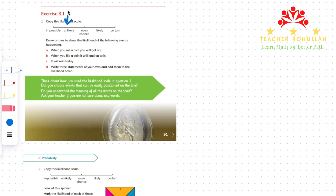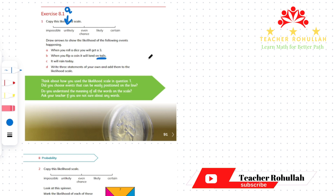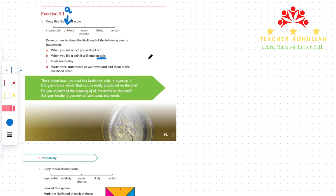I will label this as A — Part A is unlikely because getting a 3 is unlikely when you roll a dice. In Part B it says: when you flip a coin, it will land on tails. A coin has 2 possible outcomes: it will land on tails or land on heads. So landing on tails is 1 out of 2 possible outcomes. We can say landing on tails is having even chance, so I will draw the arrow on even chance and label this as B.